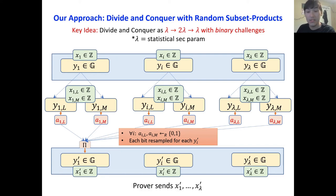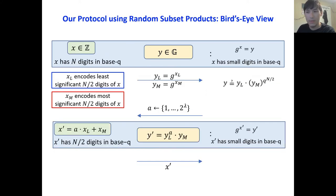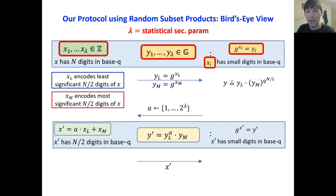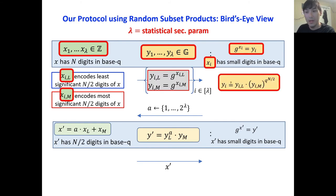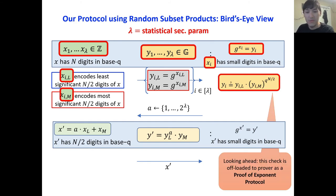At the end, the prover sends X_1 prime to X_lambda prime. Looking at the modification to our protocol: we have a statistical security parameter lambda, so our protocol is statistically secure. We have lambda different witnesses, lambda different statements, each satisfying the same constraint. The prover splits into 2 lambda different statements as shown, and the verifier computes lambda different checks. Looking ahead, this check is offloaded to the prover as it is too expensive for the verifier — we offload it via our new proof of exponentiation protocol. Then the verifier samples 2 lambda squared bits of randomness via matrix A, and recombination is done exactly as before via random subset products.